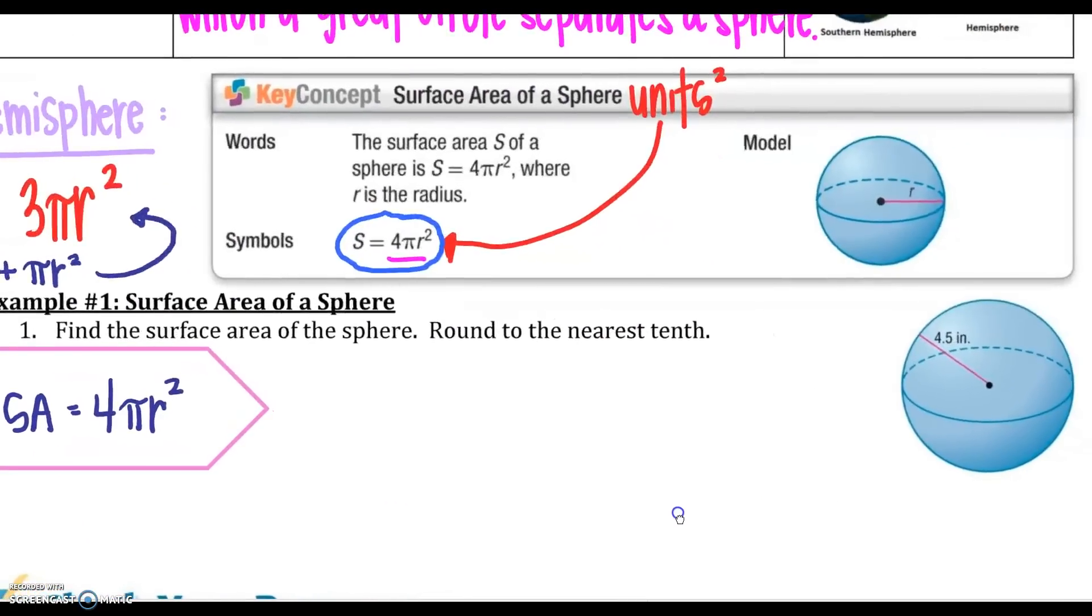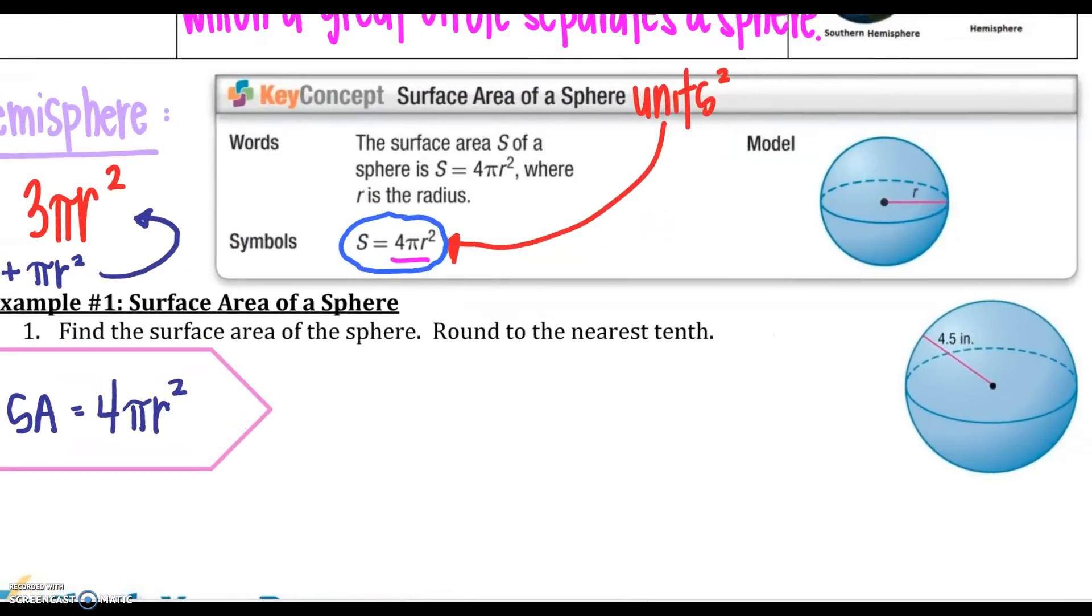All right, so we're going to find the surface area of the sphere and round to the nearest tenth. So sphere, 4πr², so I'm going to say 4π, my radius is 4.5. I am only going to square the 4.5. Make sure that happens. Don't square everything. Your surface area is going to be 254.5 inches squared.